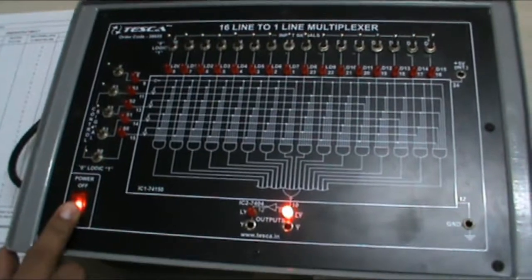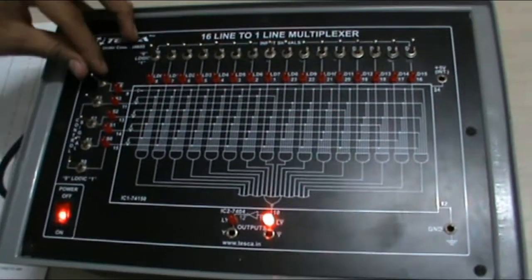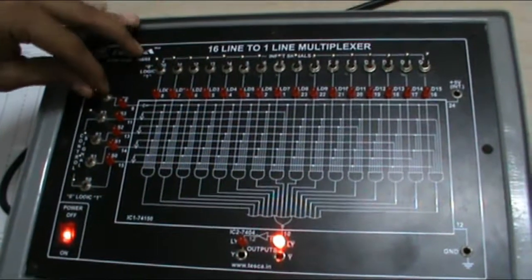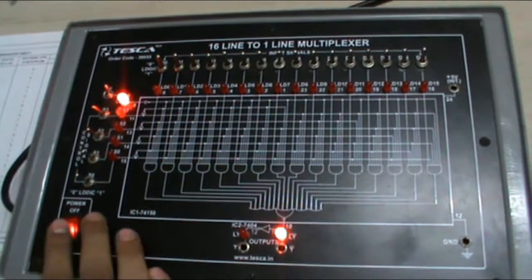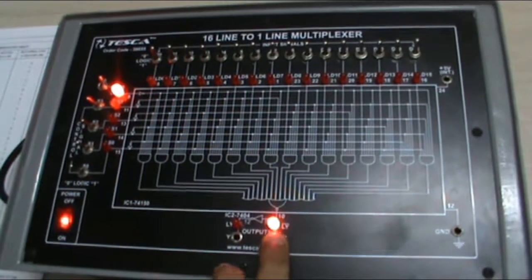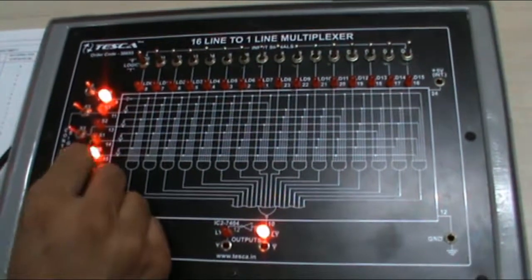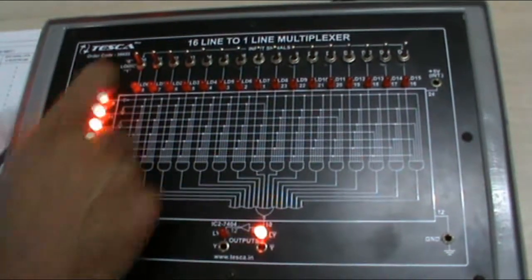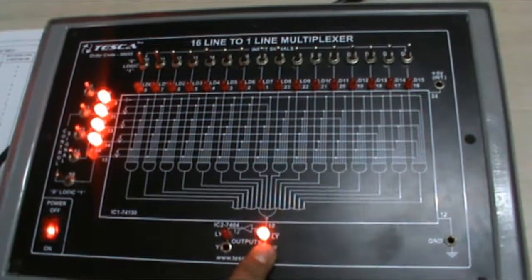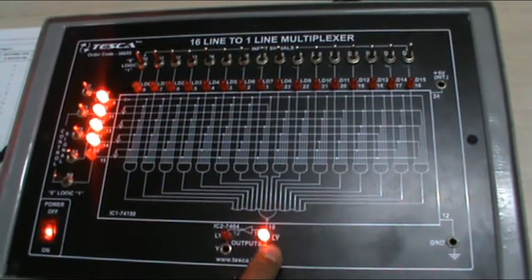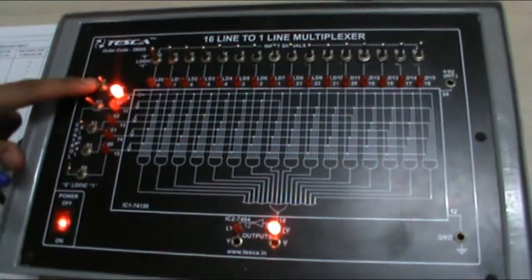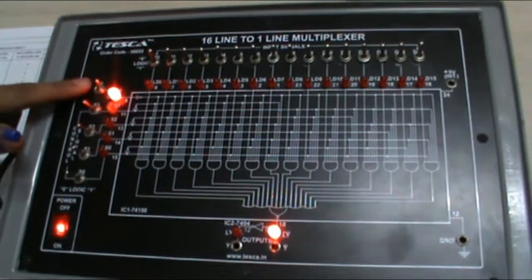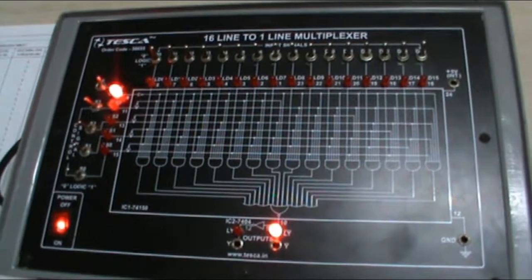Now, first check the enable switch. Turn it to logic 1. As you turn it to logic 1, you will notice that the LY bar output LED will glow irrespective of the control signal input. Whatever input I give, my LY bar LED will glow because the enable switch is at 1 and it is complemented so it works as off.